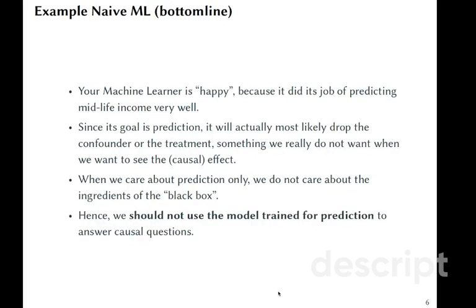So your machine learner in this situation will be really happy because it did its job very well predicting midlife income. But at the same time, we cannot use this model for causal inference because it's likely to drop either confounder or the treatment. We will not see the causal effect this way.